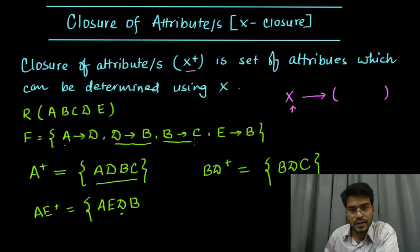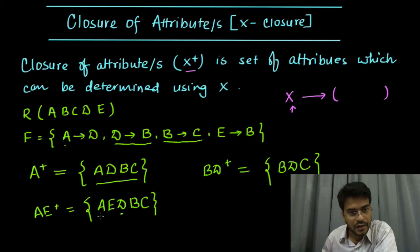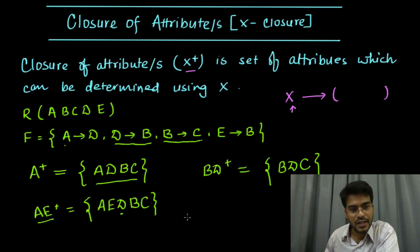Now from B, using this functional dependency, I can determine C. So let us include C, and E is already there. Make a point here: this AE can determine all the attributes. So closure of AE is the set of all the attributes in relation R. It means AE is a candidate key.